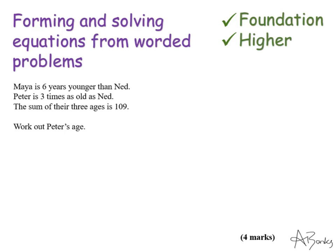This says Maya is six years younger than Ned. Peter is three times as old as Ned. And the sum of their three ages is 109. Work out Peter's age.